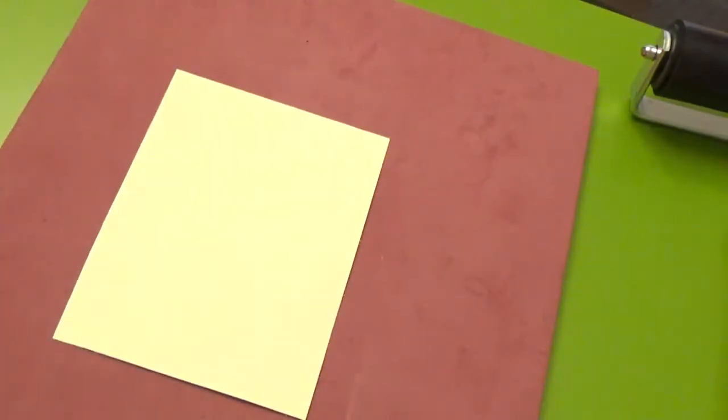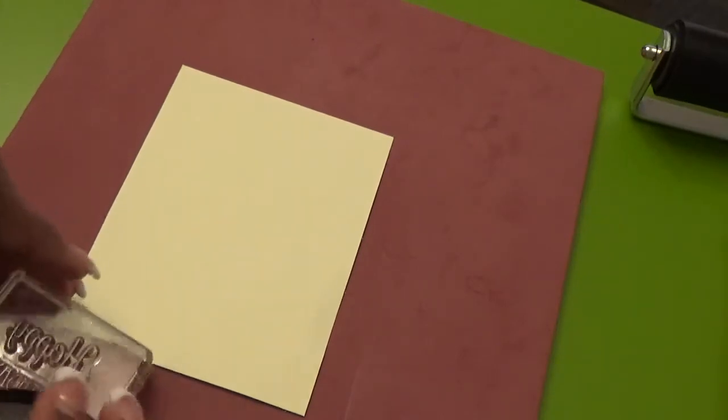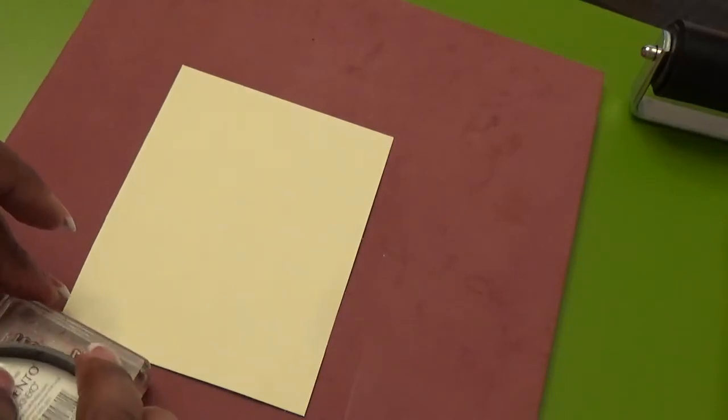Here's our piece. We're going to stamp our sentiment on. And for our sentiment, I think I'm going to use the darker color. Or, you know what we're going to do? We're going to do a two-tone sentiment. So, I'm going to use the potter's clay on the word birthday.